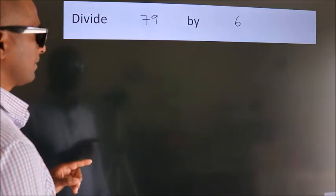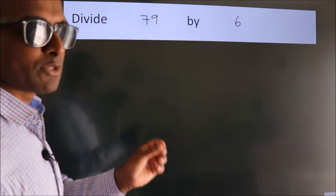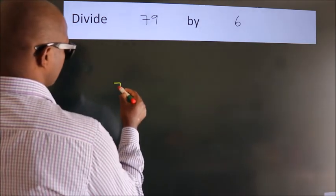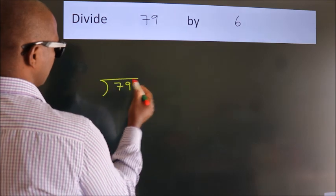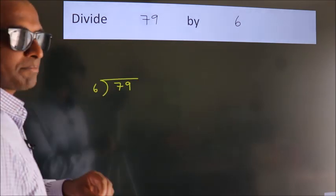Divide 79 by 6. To do this division, we should frame it in this way. 79 here, 6 here. This is your step 1.